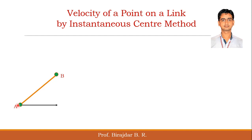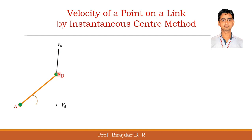You know the velocity of point A — both its magnitude and its direction. But in the case of point B, you know only the direction and not the magnitude.